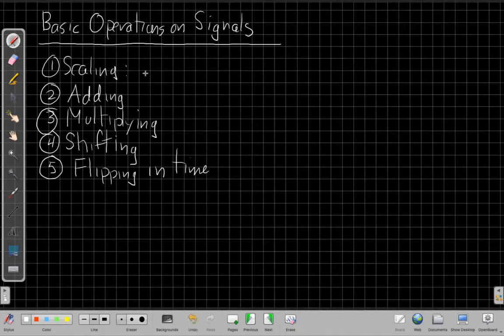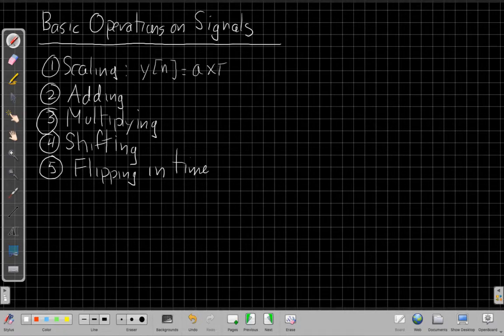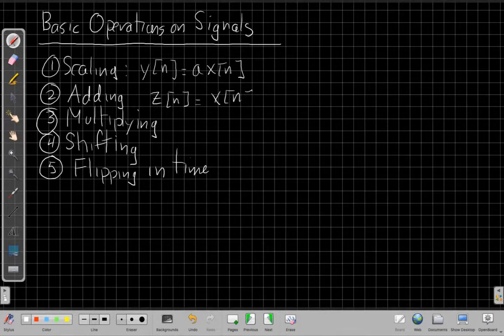And so what this looks like is we may be defining a new signal, y[n], that is equal to a times x[n]. Another example would be adding two signals. We might say some new signal, z[n], is equal to a signal x[n] plus v[n].